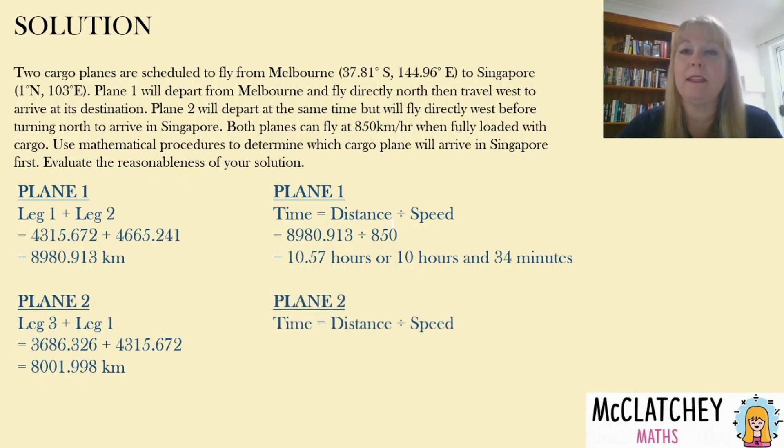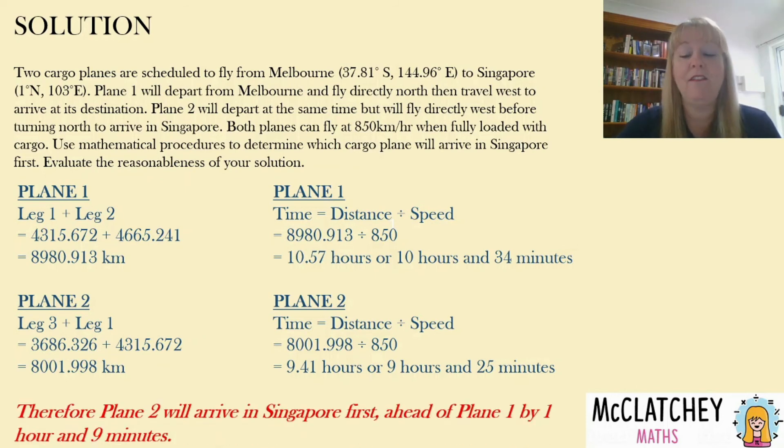We do the same thing with plane two, same formula, we're going to divide its distance by 850 and we get 9.41 hours and we take that 0.41 and multiply it by 60 minutes and we get 9 hours and 25 minutes. So we can really see now that plane two is definitely going to get there a lot faster. In fact it's going to get there an hour and nine minutes faster.